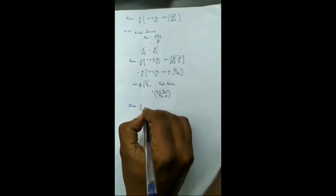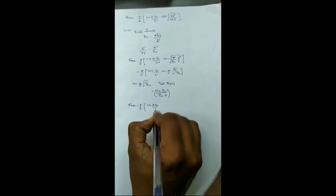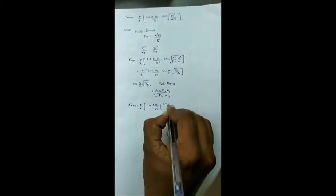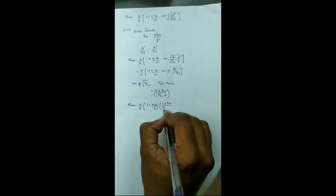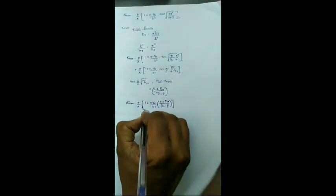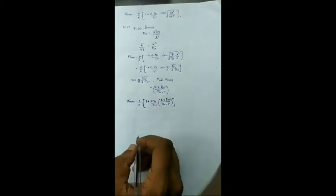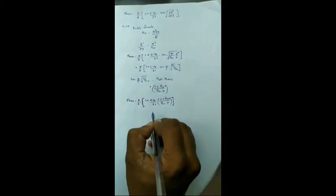So you substitute this again into your sigma max. You get P by A into 1 plus e YC by K square times 1.2 P critical by P critical minus P. So this will give the value of the maximum stress possible in your column.